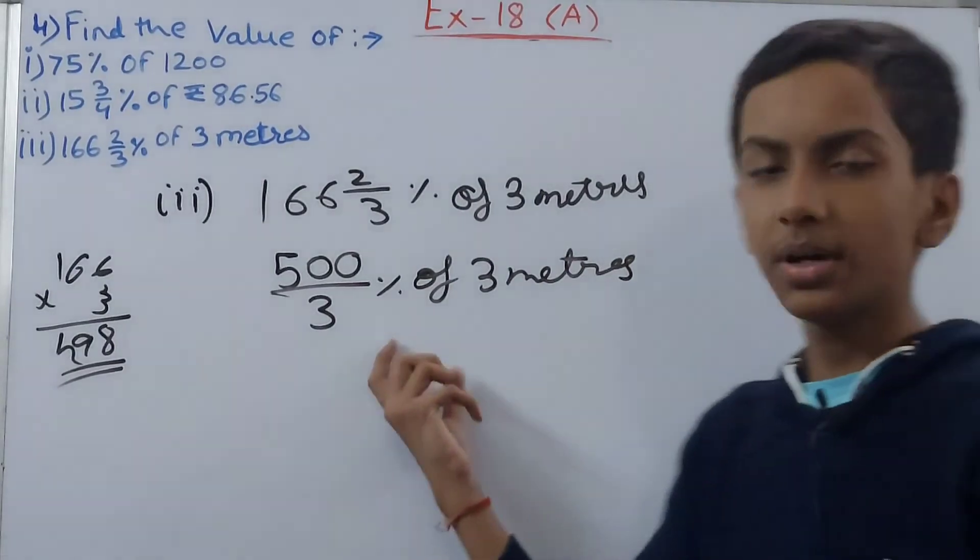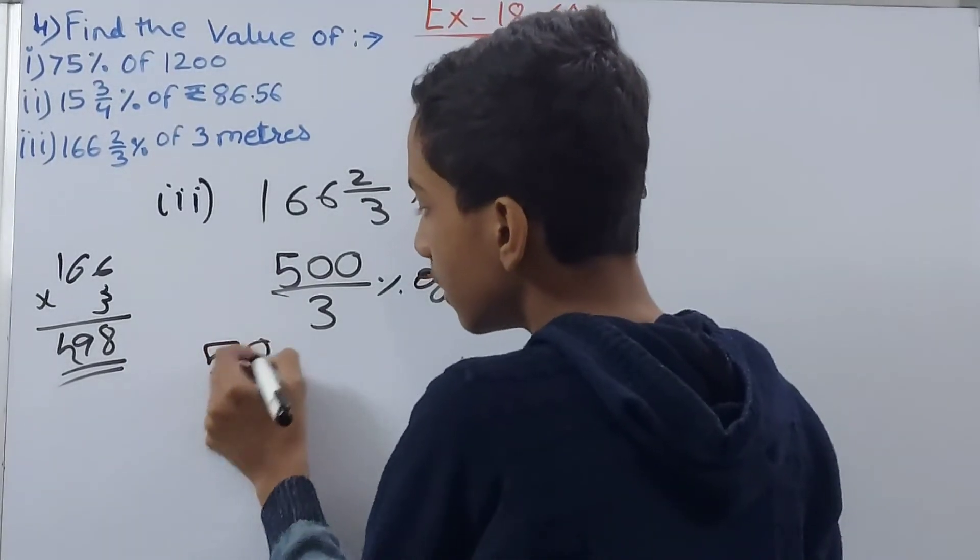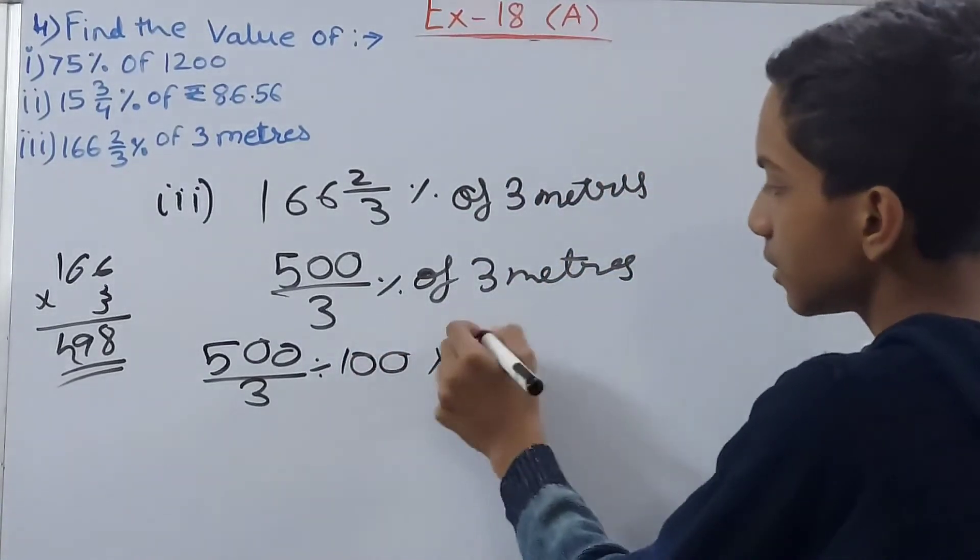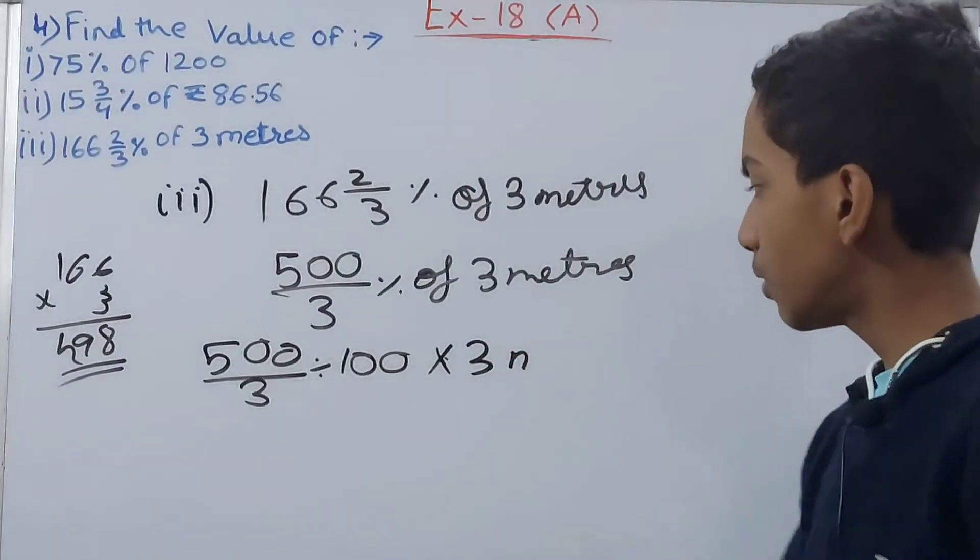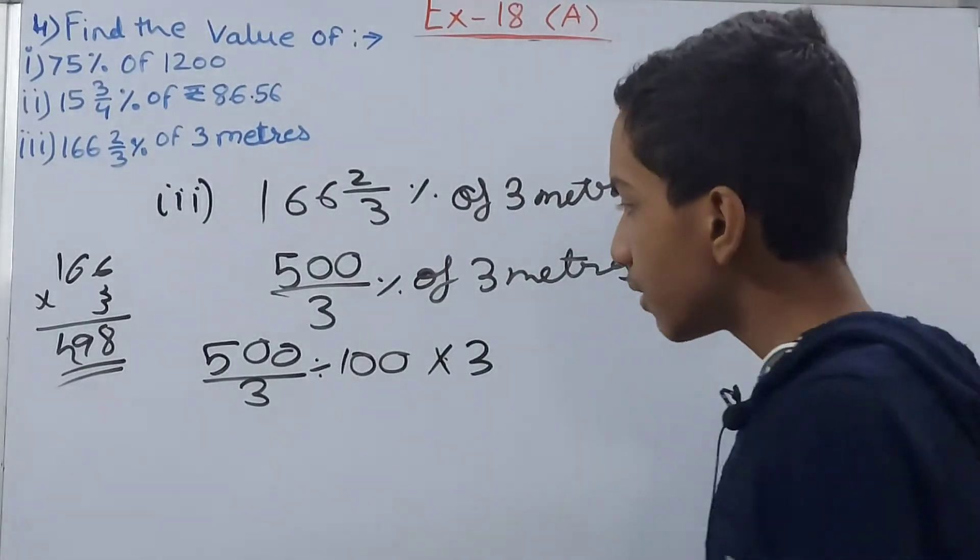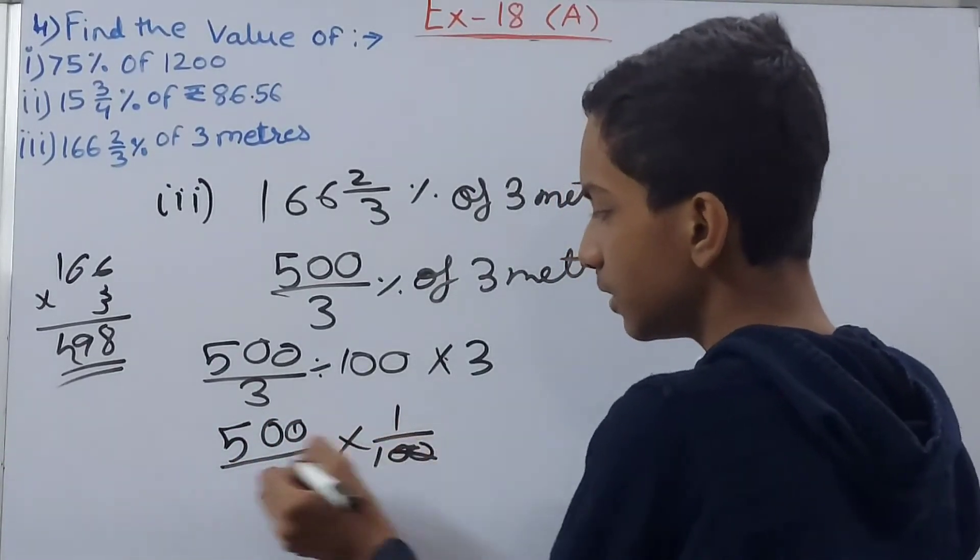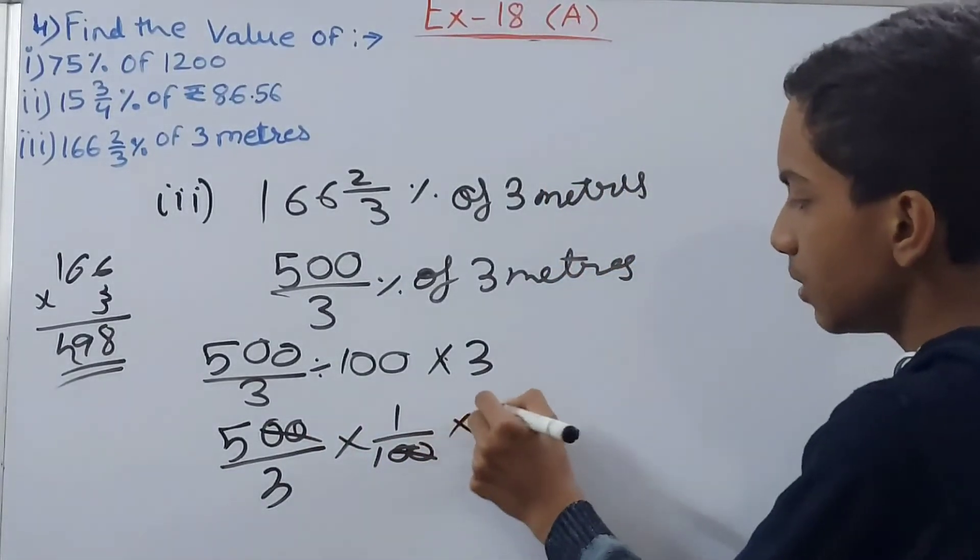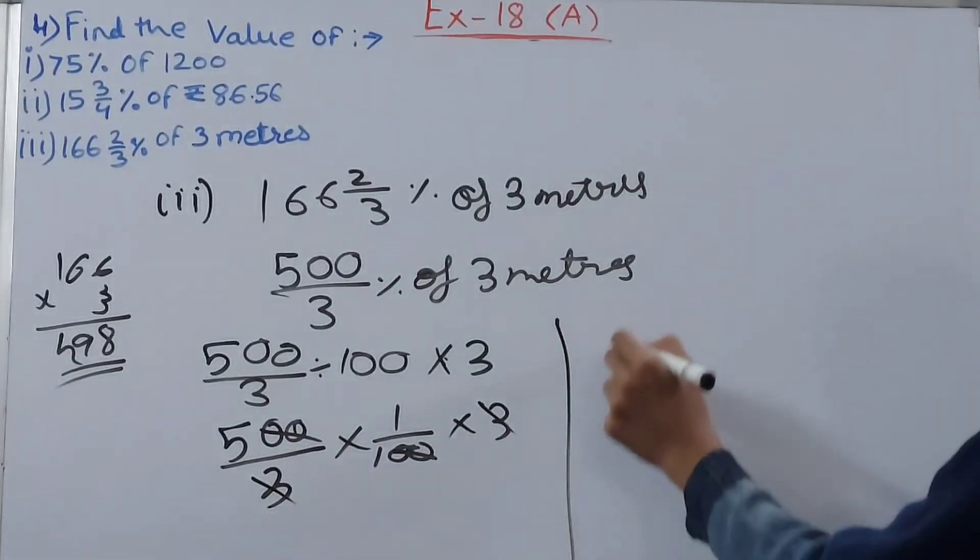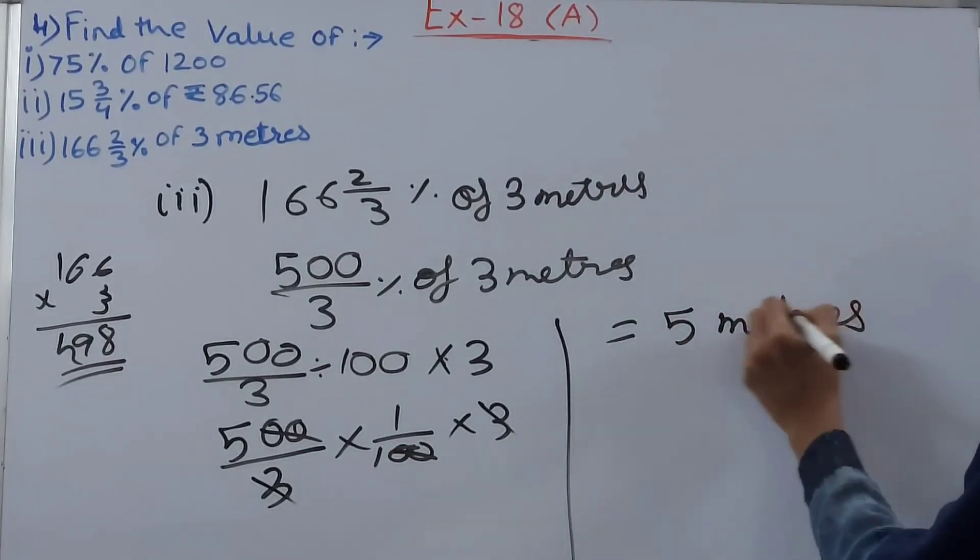We can remove the percent sign and divide this by 100. So 500 upon 3 divided by 100. 'Of' changes to multiplication sign, and then 3. Just don't write meters, keep it 3 only. You can reciprocate 100: 500 upon 3 into 1 upon 100. Cut these two zeros. This into 3, don't forget. Cut this 3 and this 3. What do we get? 5. And what here? 5 meters. So this becomes our answer.